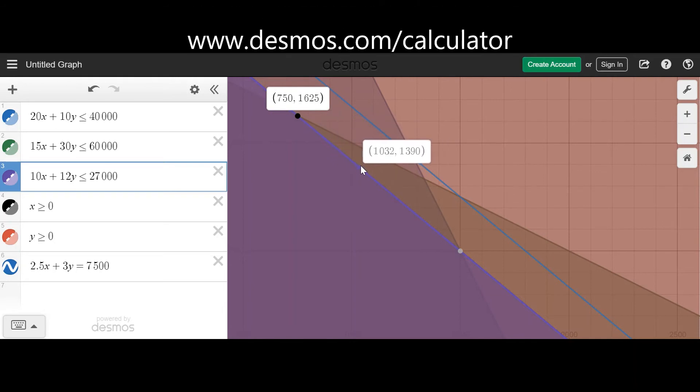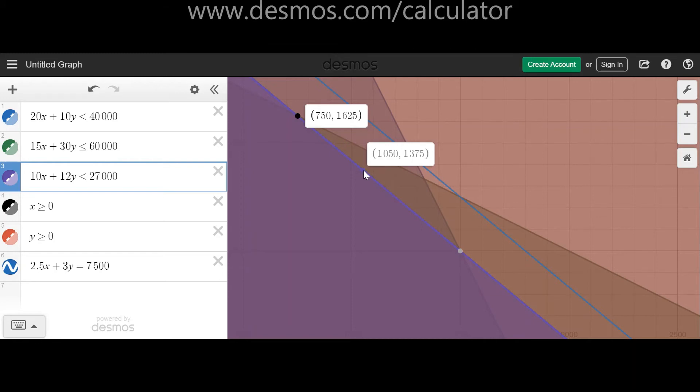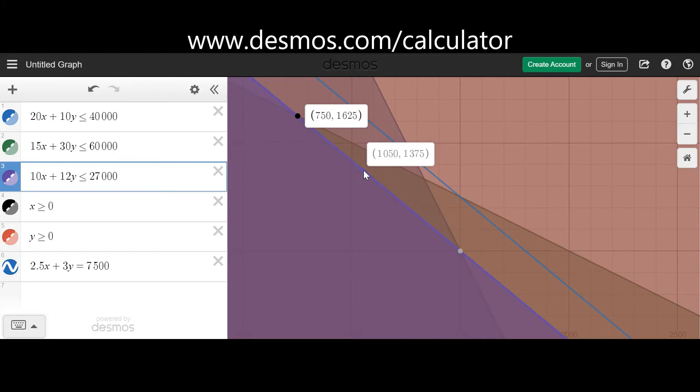Every time I increase by 6, the y value will go down by 5. For example, if I have got 1050, the next solution will be 1056, and 1375 will be 1370, as you can see here. That way, just by looking at the gradient, you can determine the corresponding values.